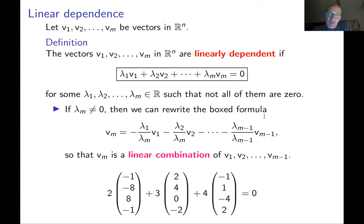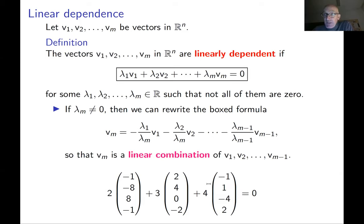Here's an example of linearly dependent vectors. You can check that this sum is a zero vector. To prove that vectors are linearly dependent, you have to find such numbers lambda 1, lambda 2, lambda m, such that the sum of these vectors taken with these coefficients is zero.